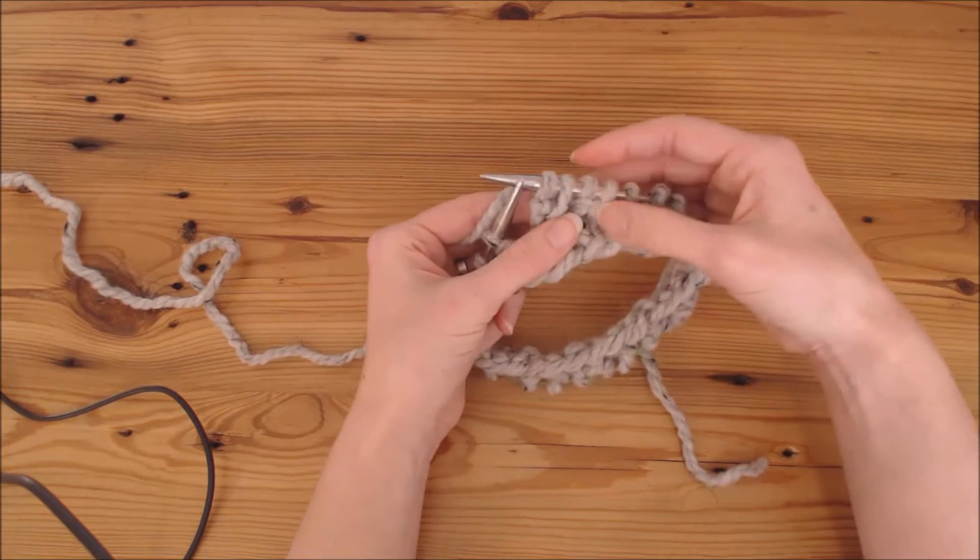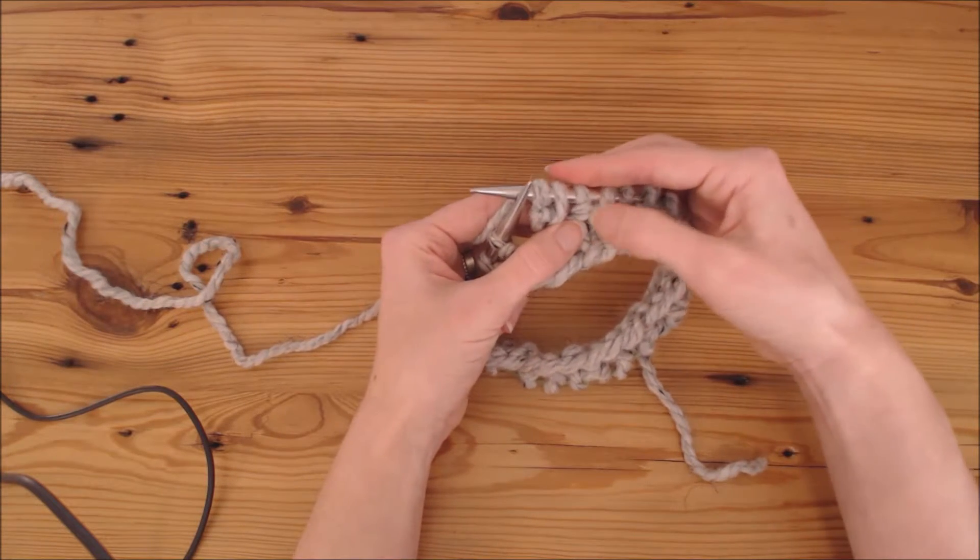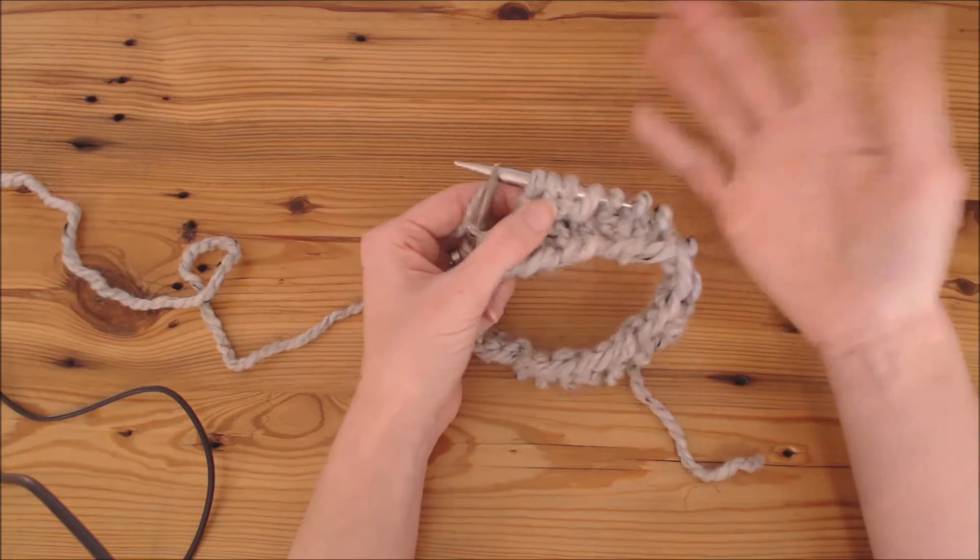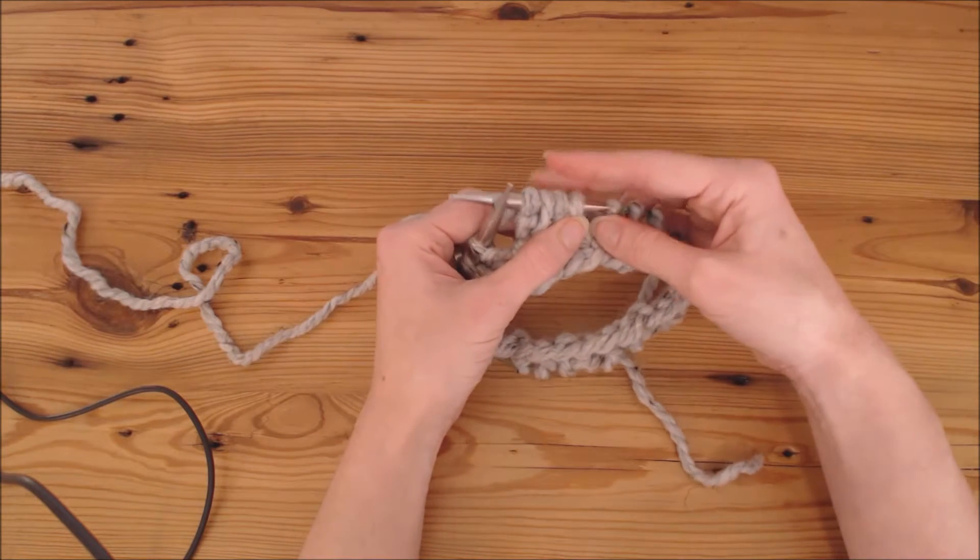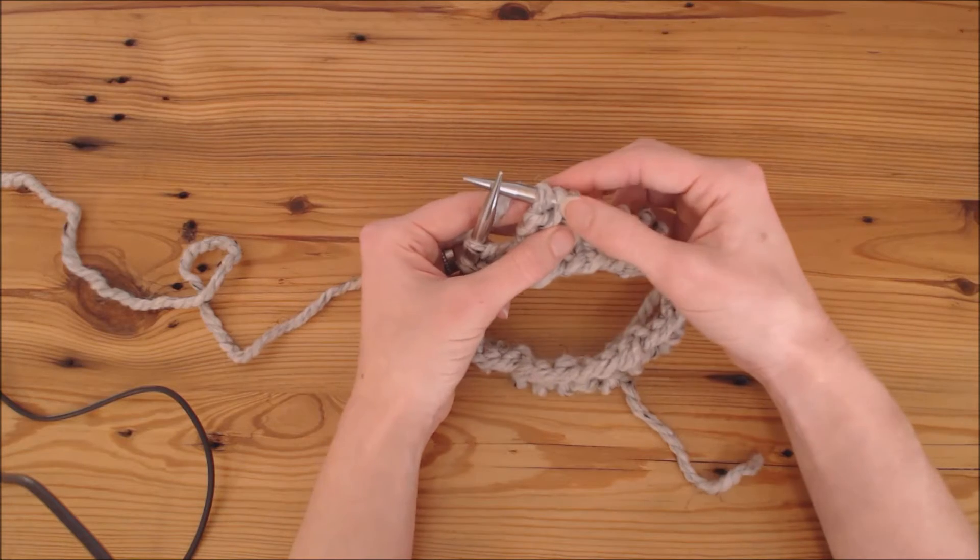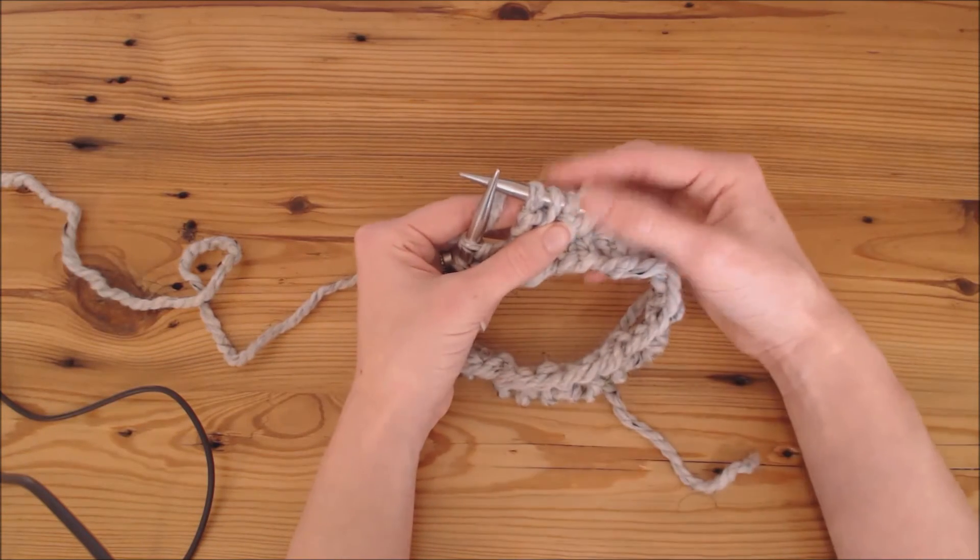It kind of looks funny, and it creates that line in the front, which gives that pattern a really nice texture, I think. So knit two together, purl two together into the same stitch.